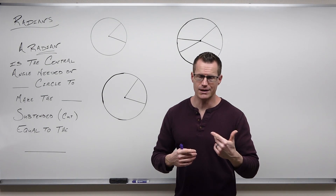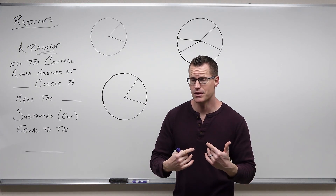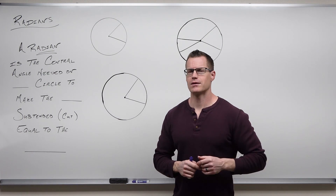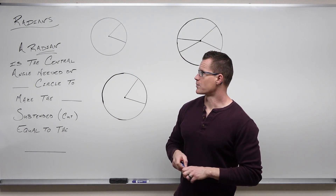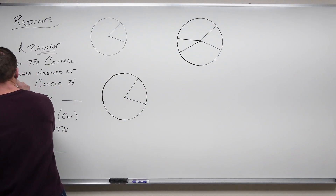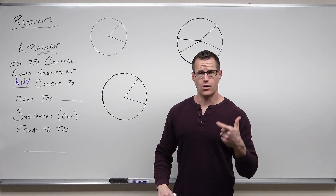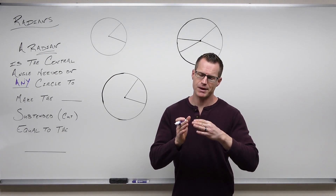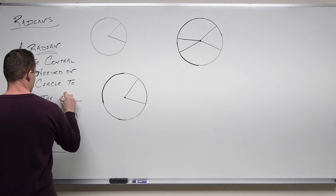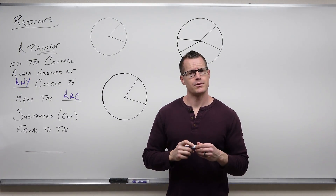Very much like one degree — it doesn't matter the size of the circle — one degree represents a swept-out angle. A radian does the same thing, but it's measured differently. It's a relationship between a radius and an arc length being equal. A radian is a central angle needed on any circle to make the arc subtended — the arc cut by two radii — equal to the radius.